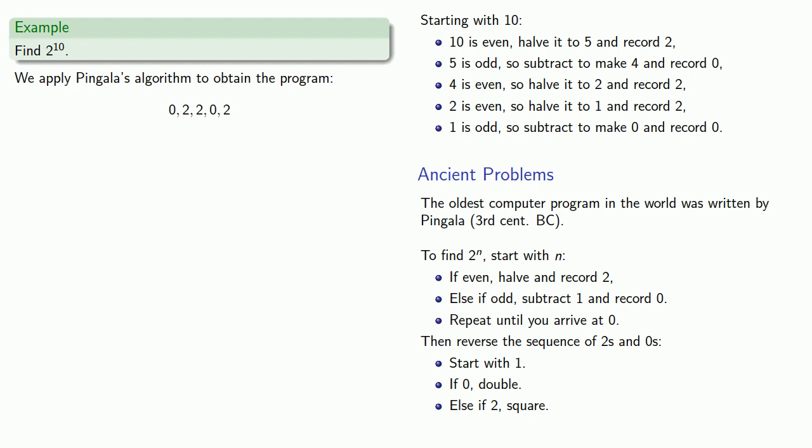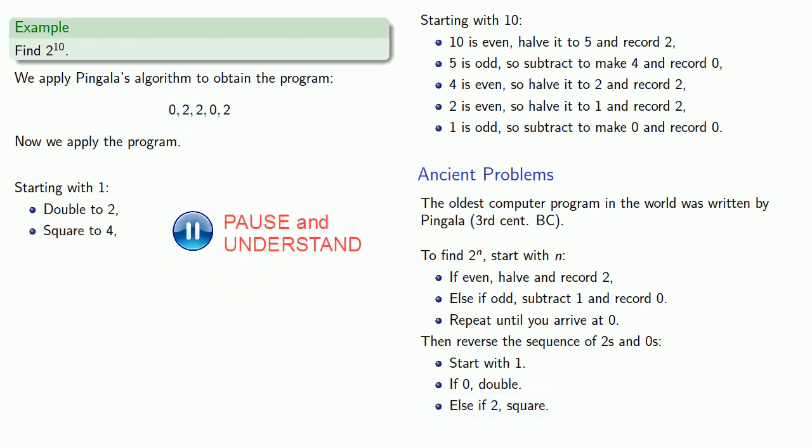And this is our computer program. So we can follow our program. We'll initialize with a value of 1. The first instruction is 0, so we'll double to 2. The next instruction is a 2, which tells us to square our number to 4. The next instruction is also a 2, so we'll square again to get 16.